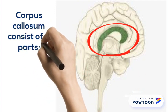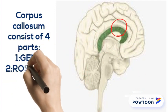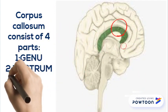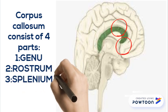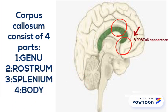The corpus callosum consists of four parts: the genu, which is towards the frontal lobe; the rostrum, which shows a bird beak appearance; the splenium, which is towards the cerebellum; and the body, which is the part between the genu and the splenium.